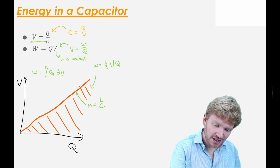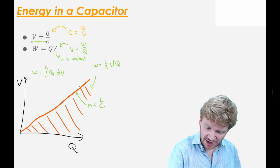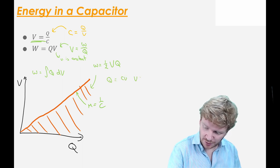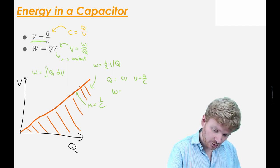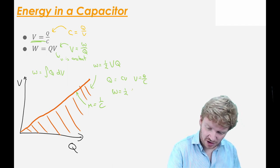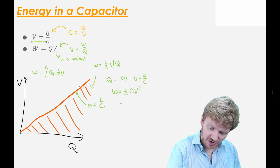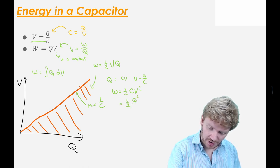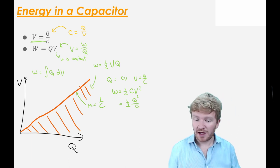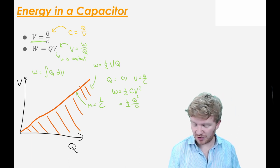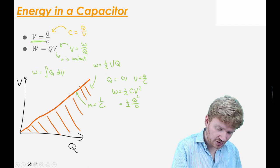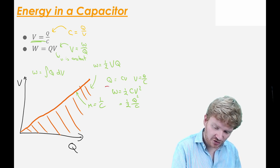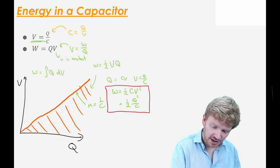And if I substitute in from my previous equation — using the fact that Q = CV and V = Q/C — I can say that the work done is one half C V squared, and it is also one half Q squared over C. Those are all different methods I could use to find the work done, or the energy stored, in a capacitor.